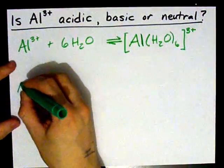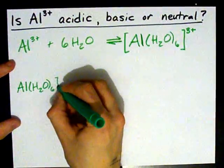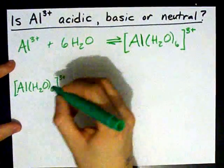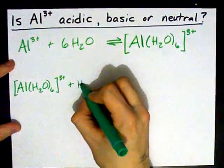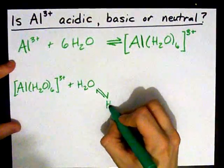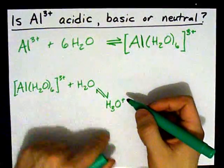Now, here's the big deal. Al H2O6, with a 3 plus charge, can act as a Bronsted-Lowry acid. What I mean by that is it can donate a proton to water, making H3O plus. See how it donated a proton?